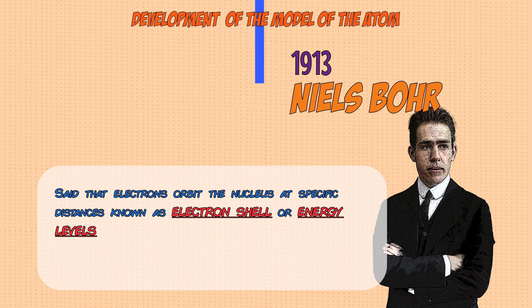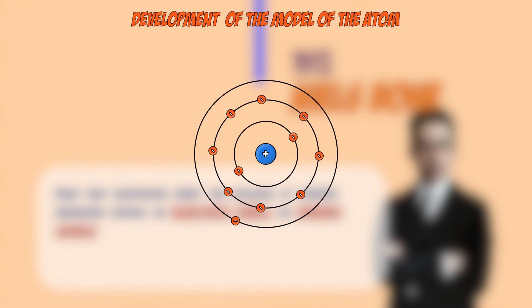All of Bohr's theoretical calculations aligned with his experimental observations, and further experiments revealed more information about the nucleus. He found that the positive charge of a nucleus could be divided into whole numbers of smaller particles, each carrying the same positive charge. These particles were called protons.